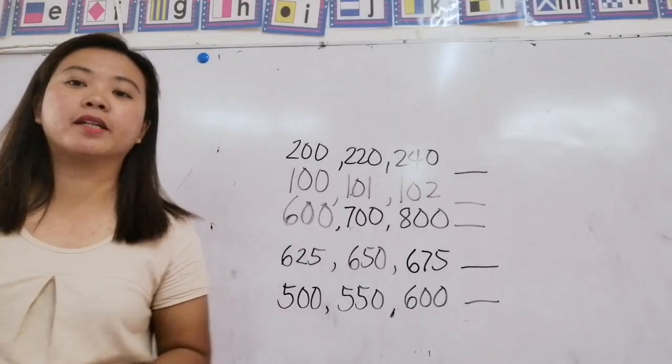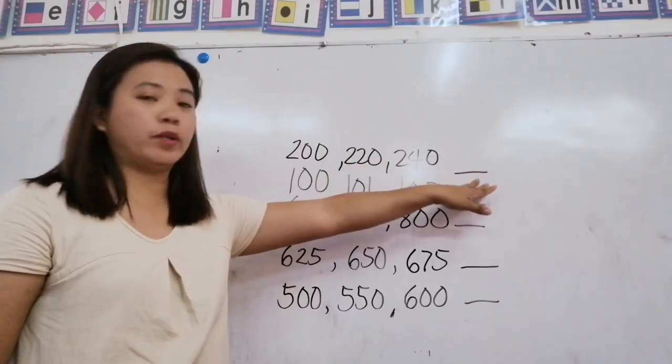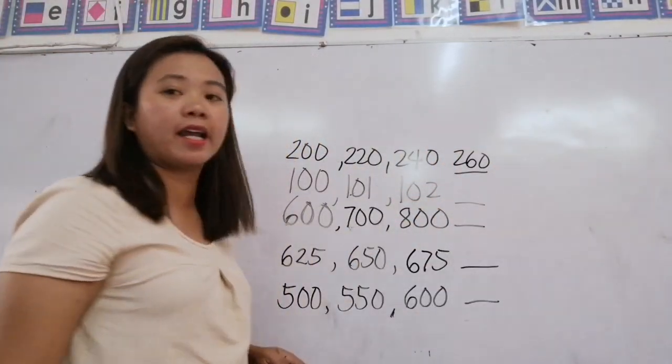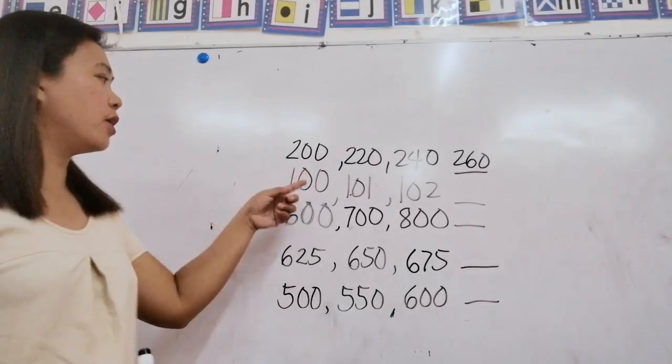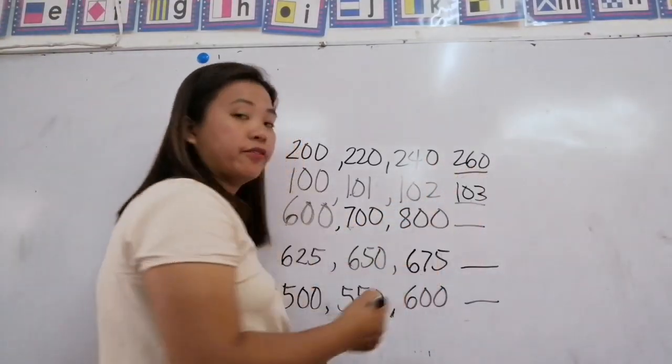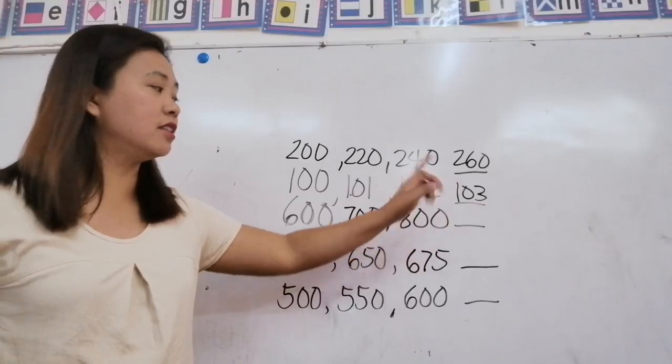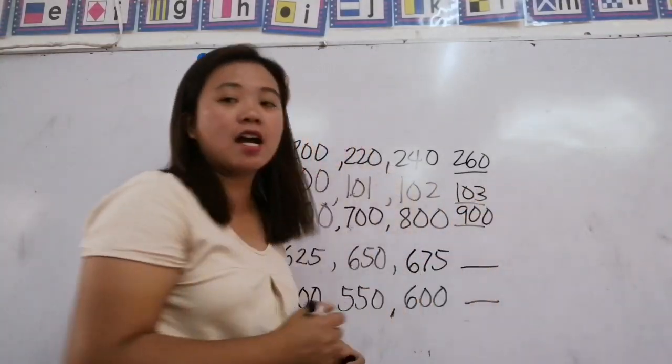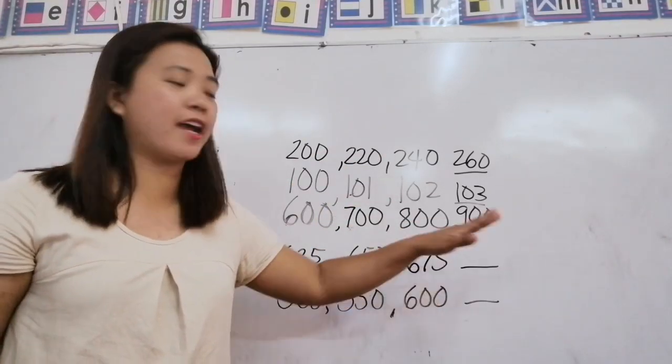This one is the pattern using numbers. We have here 200, 220, 240. What's the next one? That's right, it's 260. It grows by 20s: 200, 220, 240, 260. Now look at the next one: 100, 101, 102. What's the next one? That's right, it's 103. Very good.